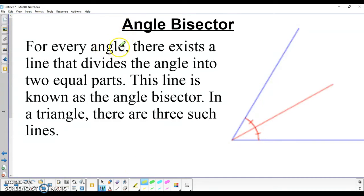For every angle that you have ever created, there is always going to exist a line that divides the angle into, and here's the key word, two equal parts. This two equal parts is going to be known as the angle bisector.